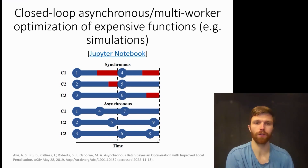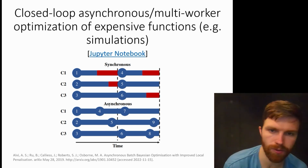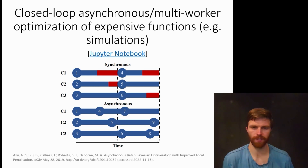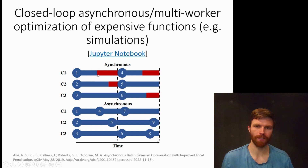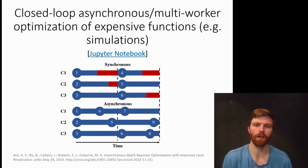For this next one, I'll take a look at closed loop asynchronous optimization of expensive functions. Like I was talking about in batch optimization versus asynchronous optimization, it's summarized in this figure here where you've got a batch of three. So in your first iteration, you do one, two, three experiments. And if your first experiment happens to finish well before your other experiments finish, that worker is essentially left idle and the resources are being unutilized.